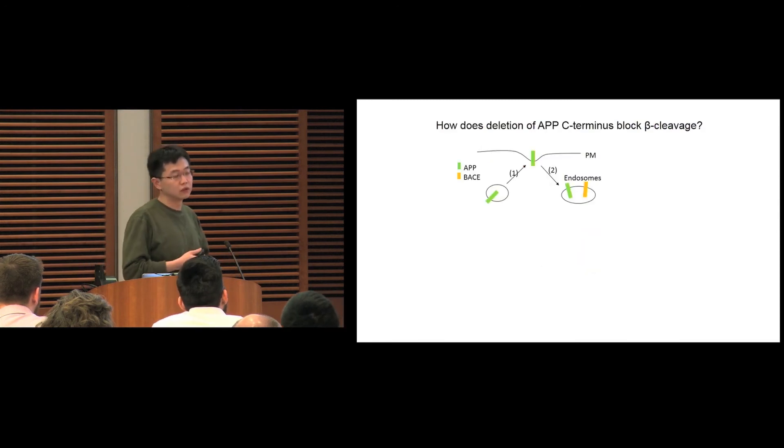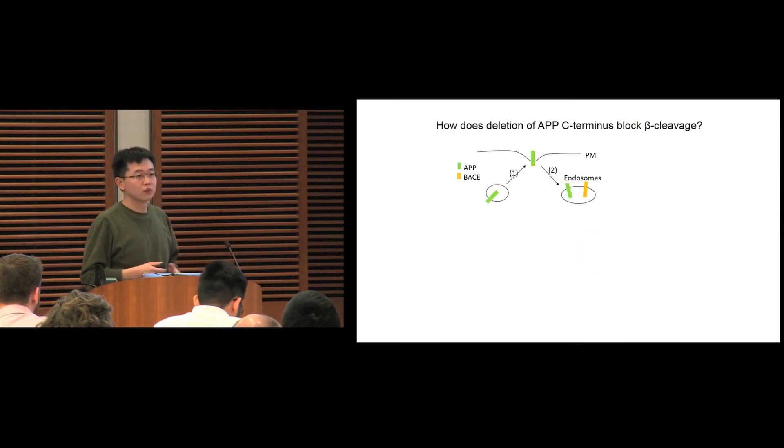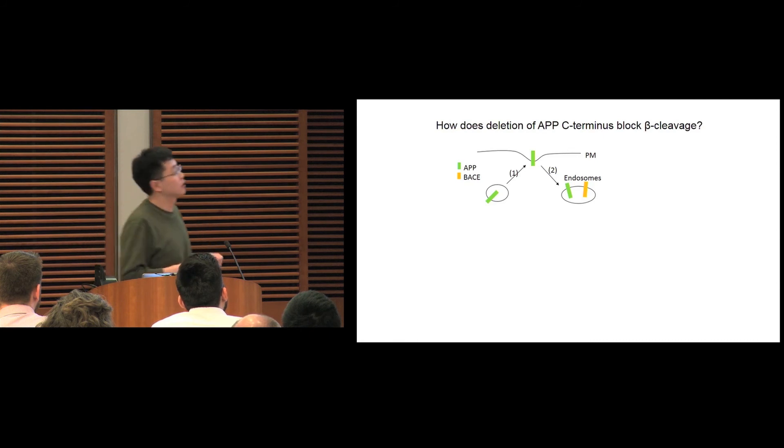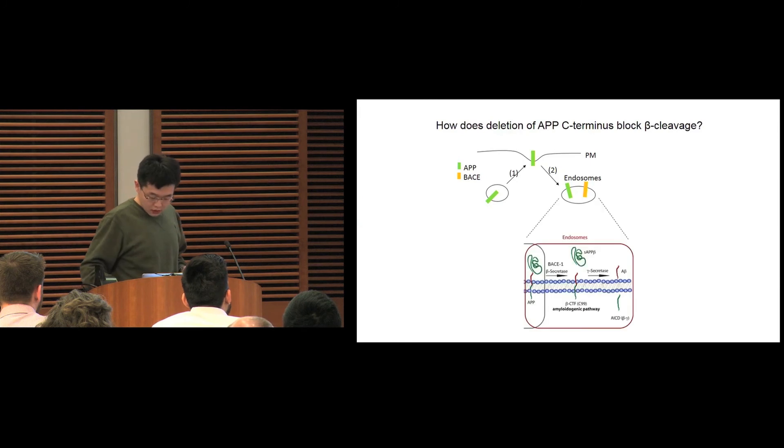Now we want to know what's the mechanism, how this works to block A-beta generation. APP is actively transported inside cells. After being synthesized, APP is first transferred to the plasma membrane, and then APP molecules can be internalized into the endosome, where it interacts with BACE1 and undergoes beta cleavage. We looked at APP trafficking inside cells and found that deletion of the C-terminal of APP can block APP endocytosis, step two.